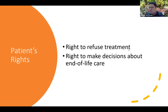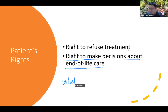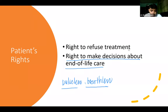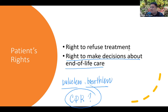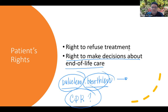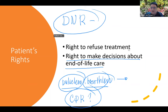Patients also have the right to make decisions about end-of-life care. When a patient is pulseless and breathless, we perform CPR — but your patient has the right to choose whether they want CPR or not. For example, if I decide that when I become pulseless and breathless I don't want CPR, you have no right to touch me. This is referred to as DNR — Do Not Resuscitate — and it is the patient's right.